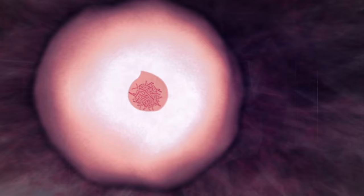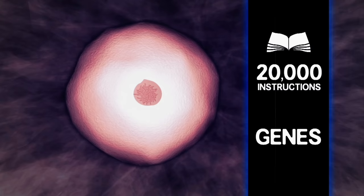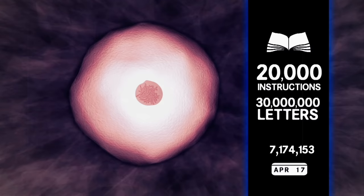It's estimated that all the chapters together hold about 20,000 individual instructions called genes. Written out, all those 20,000 instructions are 30 million letters long. If someone were writing one letter per second, it would take them almost an entire year to write it once.